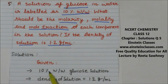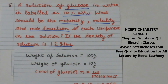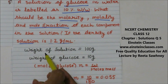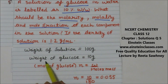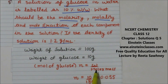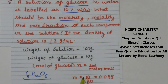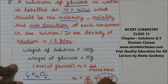10 percent weight by weight of glucose solution means the weight of solution is 100 gram and the weight of glucose in it is 10 gram. The mole of glucose is given mass divided by molar mass. The molar mass of glucose is 180, as the formula for glucose is C6H12O6. So moles of glucose = 10/180 = 0.055 mole.